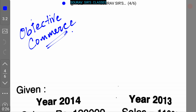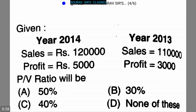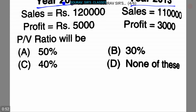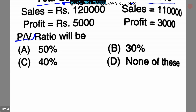Today our topic is Objective Commerce. Here is our first question. In this question, it is given that in year 2014 the sales was rupees 1,20,000 and in year 2013 the sales was rupees 1,10,000. The profit in 2014 was rupees 5,000 and the profit in 2013 was rupees 3,000. We have to find the value of PV ratio.